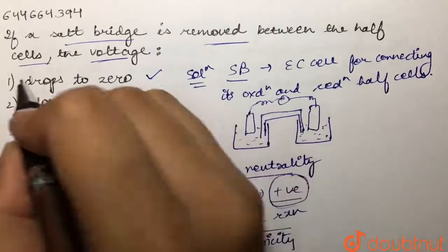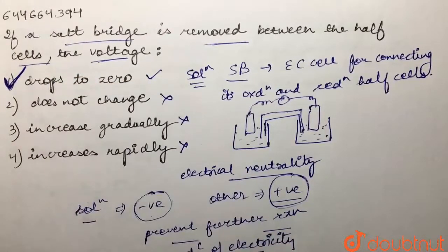So our correct answer to this question would be option number one: it drops to zero. As soon as we remove the salt bridge, the voltage of the cell drops to zero.